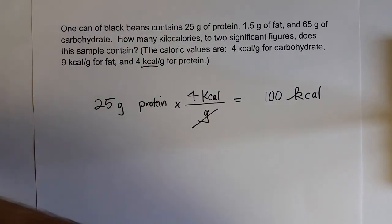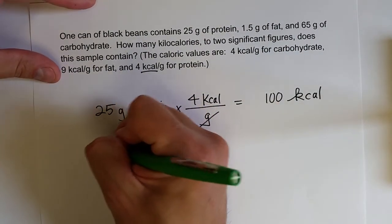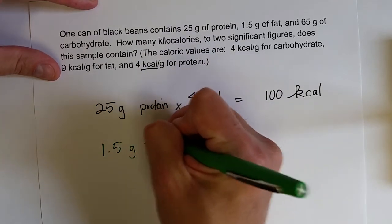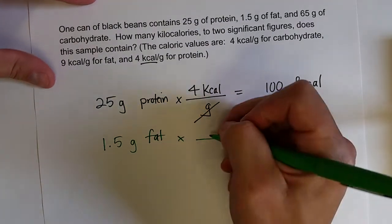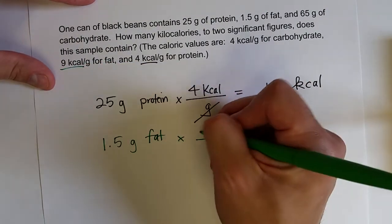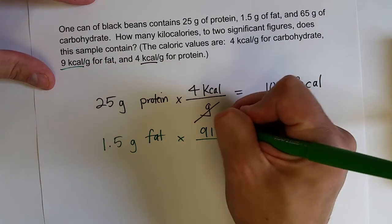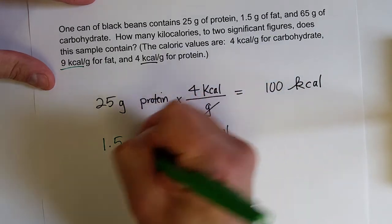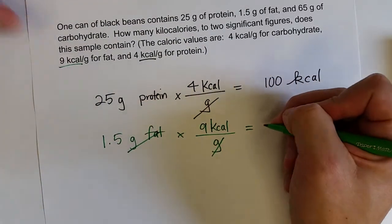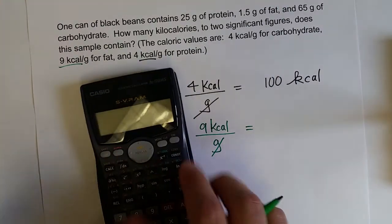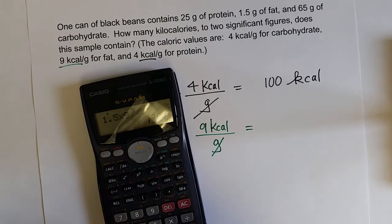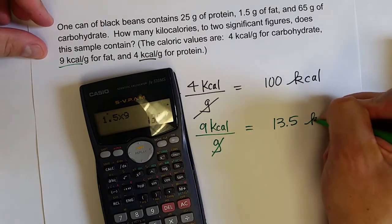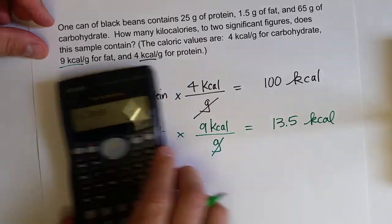It has 1.5 grams of fat. And for each gram of fat, there are 9 kilocalories. Grams cancel out, and so 1.5 times 9, and punch this in the calculator just so I can get it right, and that's 13.5 kcals.